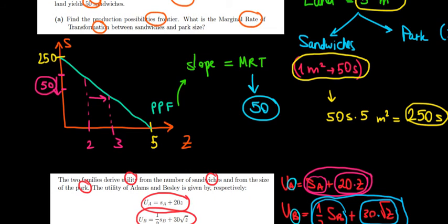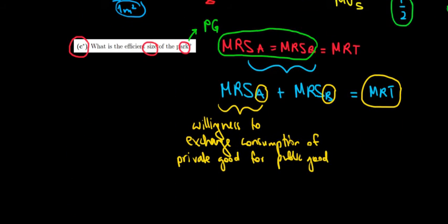We have a limit to how much we can exchange sandwiches for the park that's given by our production possibilities frontier. This is our limitation. Now, with this in mind, let's just solve the math. Let's just solve the math over here.